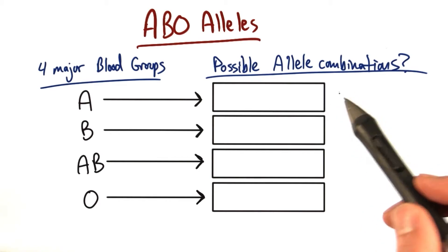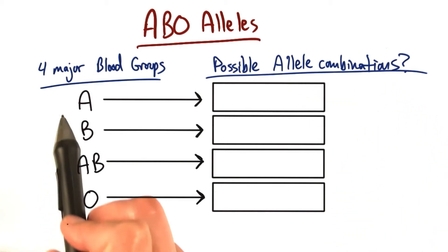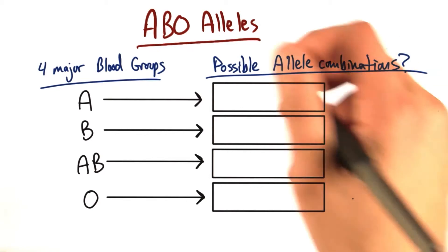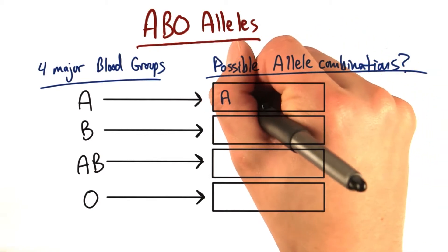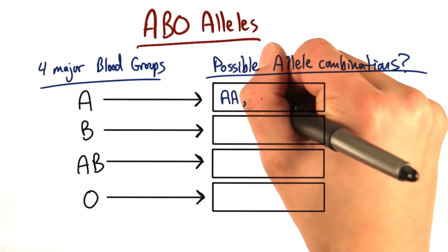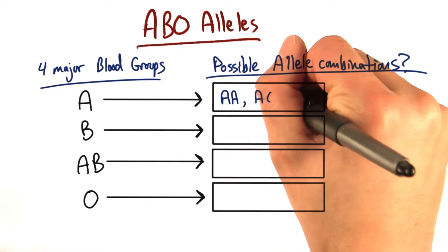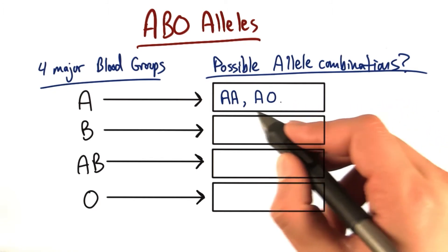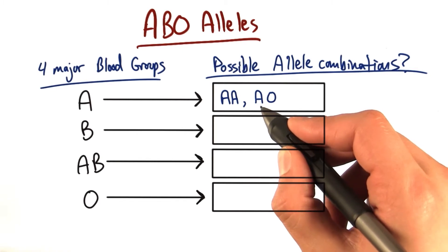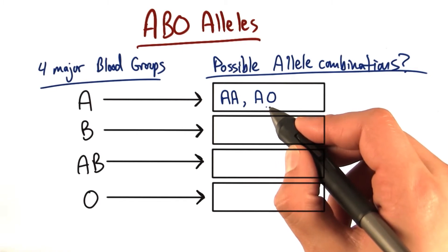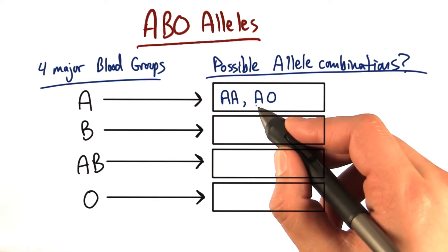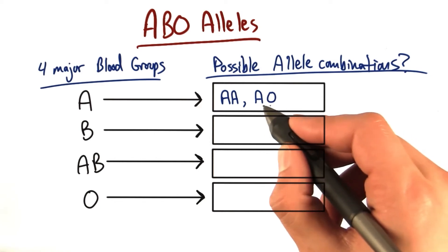I want you to tell me what the possible allele combinations are for each of these different blood type groups. I'll help you out with the first one and give you an example. To be blood type A, we could have two A alleles, or we could have an A allele and an O allele. Because the O allele wouldn't produce anything — we get nothing. But the A allele would put the A antigen or the A carbohydrate on the surface of our red blood cells, because the A allele codes for the ABO protein that will make and put the A carbohydrate on the surface of red blood cells.